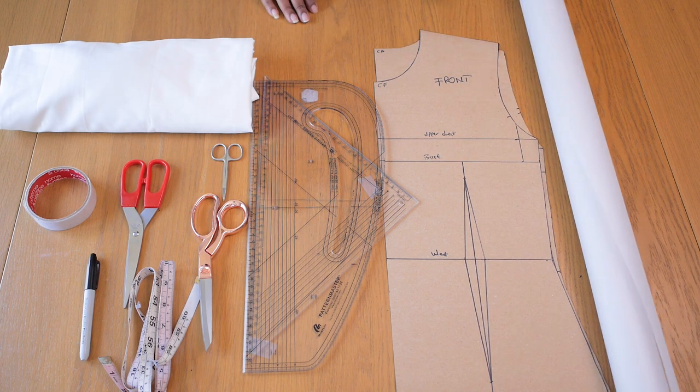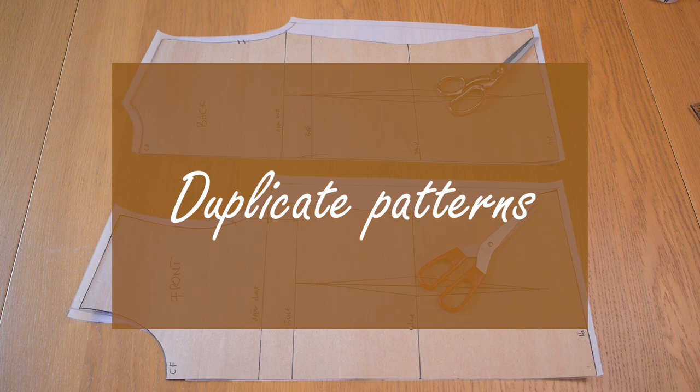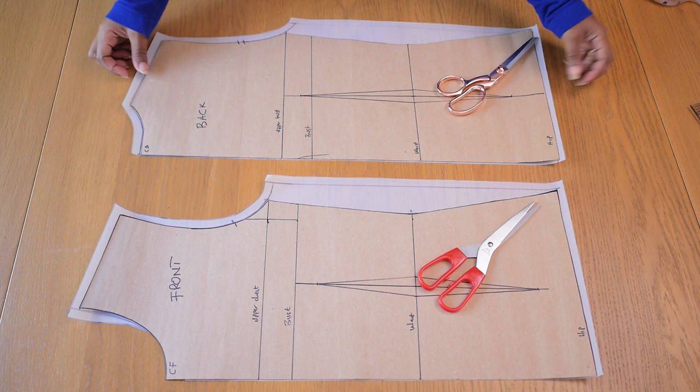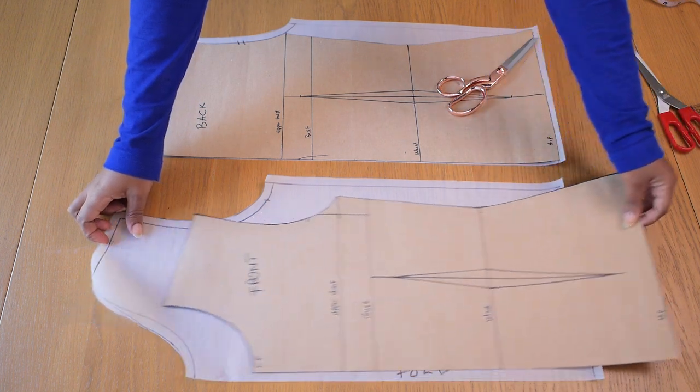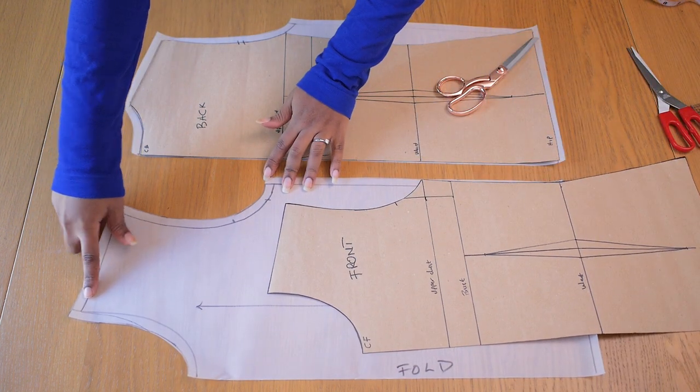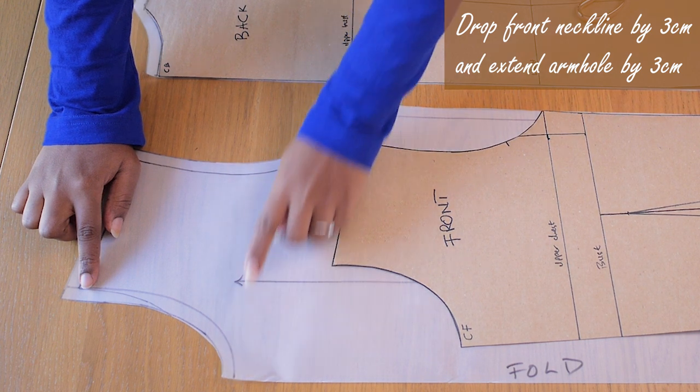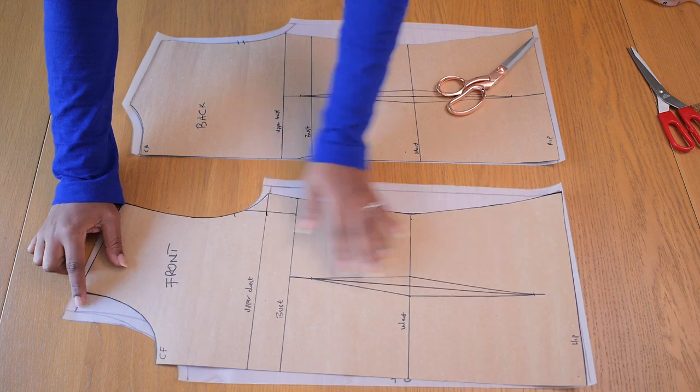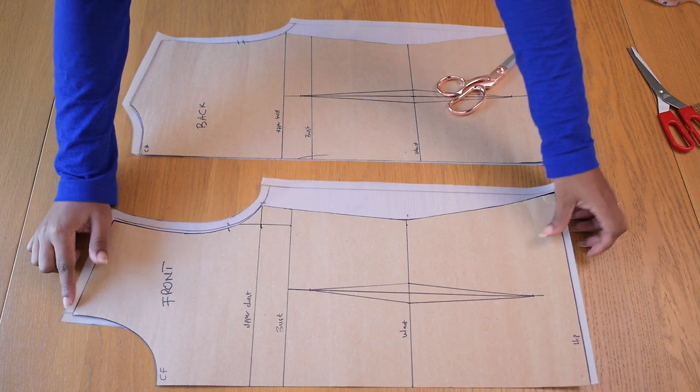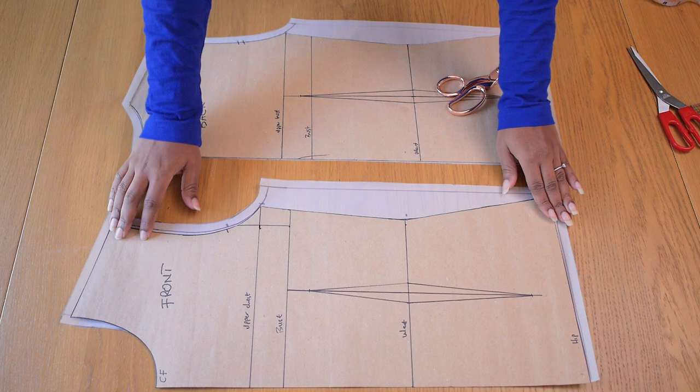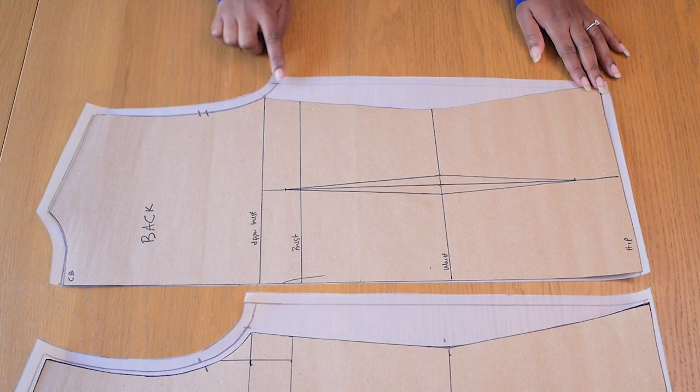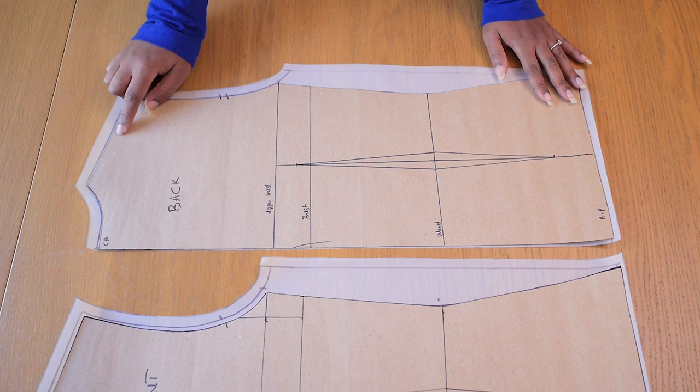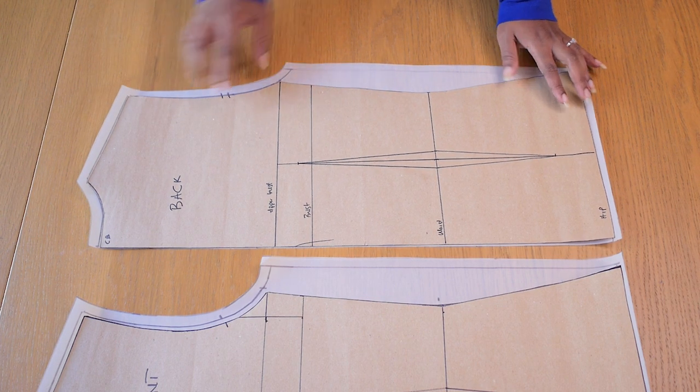I'll also be needing some pattern paper because we need to create some fresh pattern in order to make this design. So the first thing you need to do is to duplicate your blocks like I always do in any video where I'm going to be starting from my basic bodice. I like to duplicate fresh pattern and the difference with this duplicate is I dropped the front neckline by three centimeters and extended the front armhole by three centimeters.